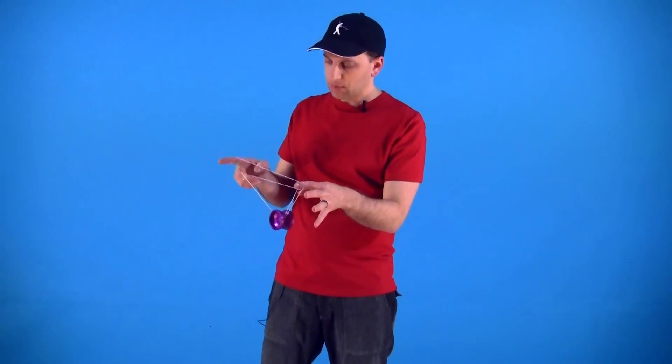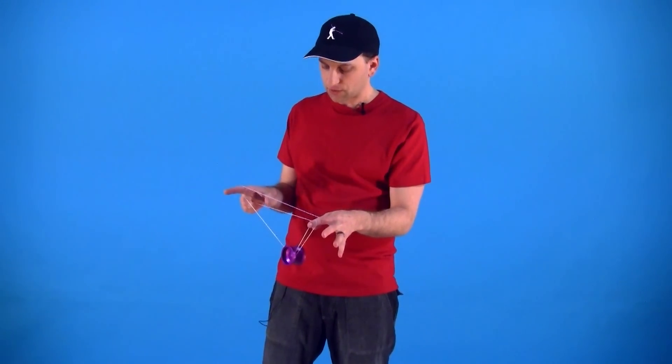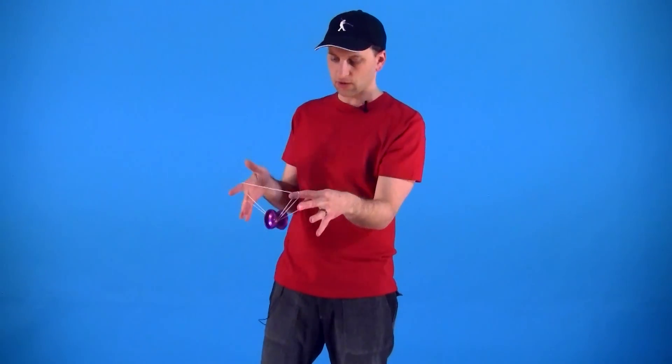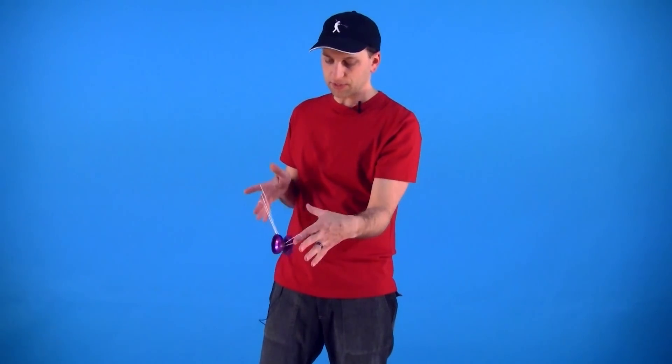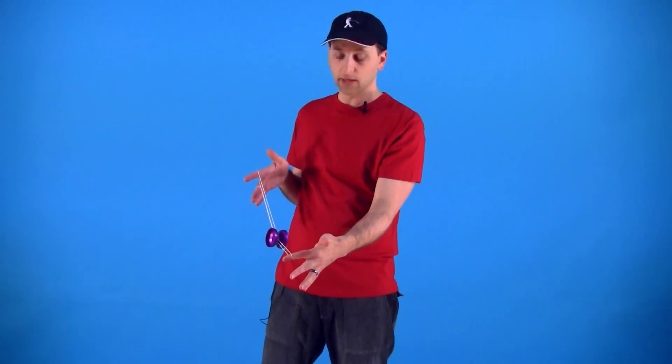To get into the Kamikaze Mount, you are going to take the string that is coming off of your yoyo hand and you are just going to hook it underneath the yoyo, just like that. Then you are going to let the string off of your thumb on your opposite hand and that is what gets you right into this mount.